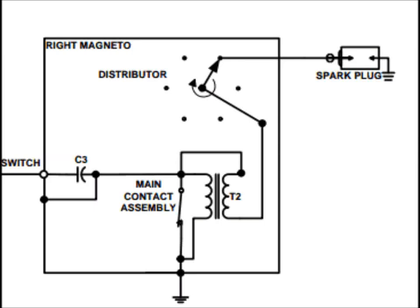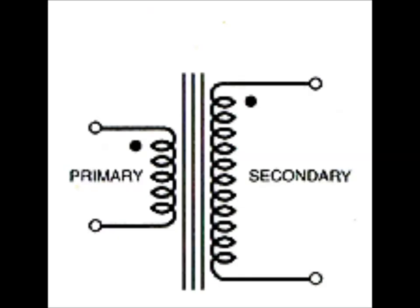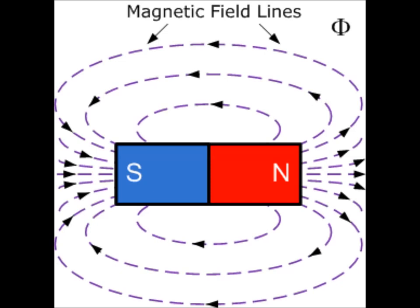The operation of the magneto starts with the creation of an AC current. The current is created by turning a high-strength permanent magnet on the rotor in close proximity to the magneto coil. The coil contains two windings: a primary winding and a secondary winding. The primary winding's purpose is to capture the magnetic lines of flux created by turning the magnet.